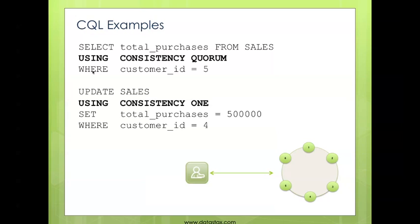From a CQL — Cassandra Query Language — example, using a consistency strategy is very easy. You simply use the 'using consistency' clause when you issue a select, an update, or an insert, and that invokes your chosen strategy in Cassandra.